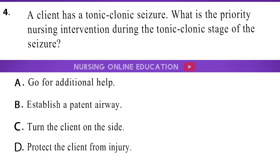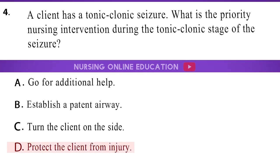Question 4. A client has a tonic-clonic seizure. What is the priority nursing intervention during the tonic-clonic stage of the seizure? A. Go for additional help. B. Establish a patent airway. C. Turn the client on the side. D. Protect the client from injury. The answer is option D: Protect the client from injury.